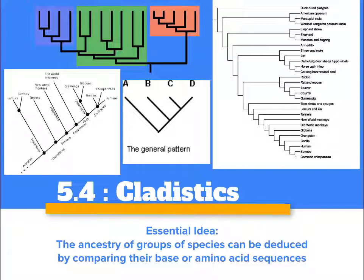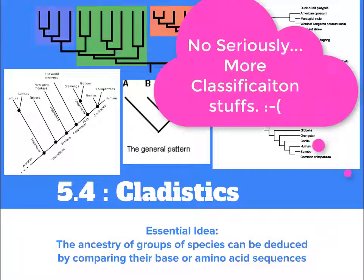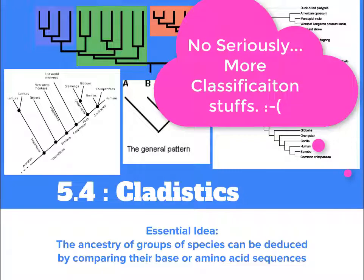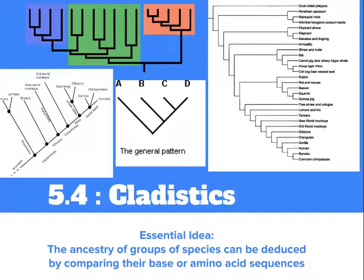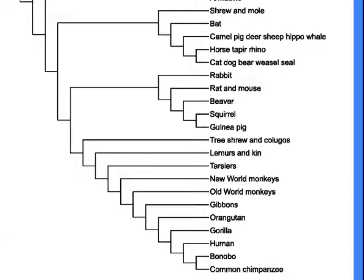Welcome to 5.4, where you will learn many cool things about cladistics. The essential idea here is that the ancestry of groups of species can be deduced by comparing their base or amino acid sequences. We already studied the classification of organisms with Carl Linnaeus and his binomial nomenclature. To recap: taxonomy is the study of classification of organisms, and binomial nomenclature is the system of naming a species. Cladistics, which is a part of the science of phylogeny, looks at the evolutionary relationships of these organisms.